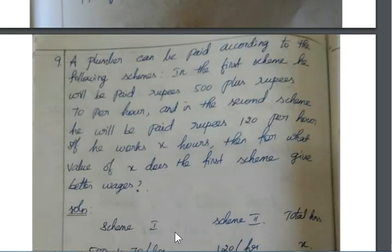A plumber can be paid according to the following schemes. In the first scheme, he will be paid 500 rupees plus 70 rupees per hour. 500 rupees is constant, and then each hour, 70 rupees is added. In the second scheme, he will be paid 120 rupees per hour with no constant payment.